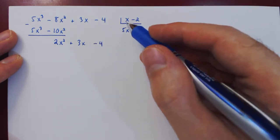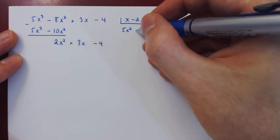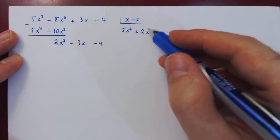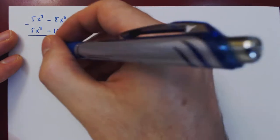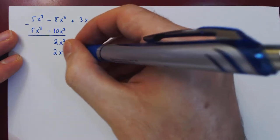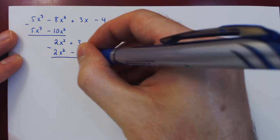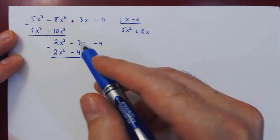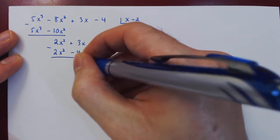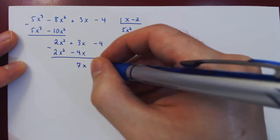We can keep going. We can eliminate the 2x² using x again by adding up 2x. Multiply 2x by x - 2, gives us 2x² - 4x. We subtract both polynomials. These two cancel. 3x negative negative, so positive 4x, 7x. -4 minus 0, -4.